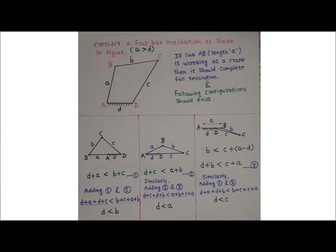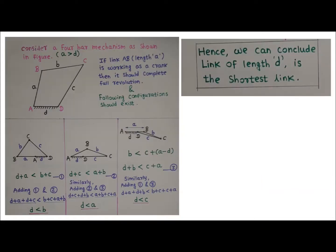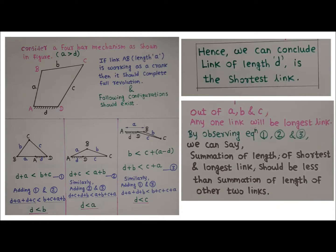Since d is smaller than a, b, and c, we conclude that the link of length d is the shortest link, and it is fixed. Out of a, b, and c, one link will be the longest. By observing equations 1, 2, and 3, the summation of the lengths of the shortest and longest links must be less than the summation of the lengths of the other two links. So in a four-bar mechanism, if S + L < P + Q and the shortest link is fixed, then input link AB works as a crank.